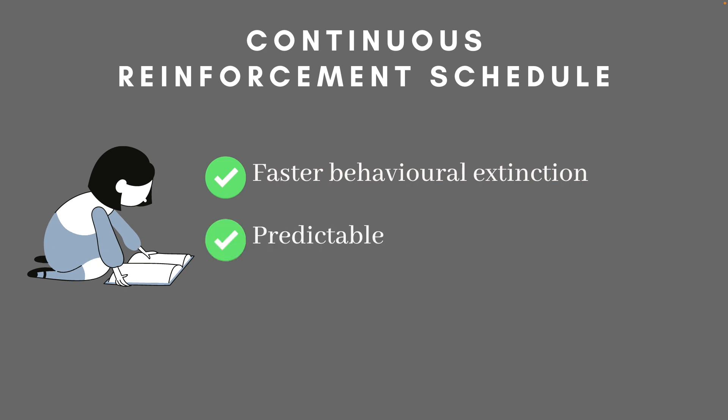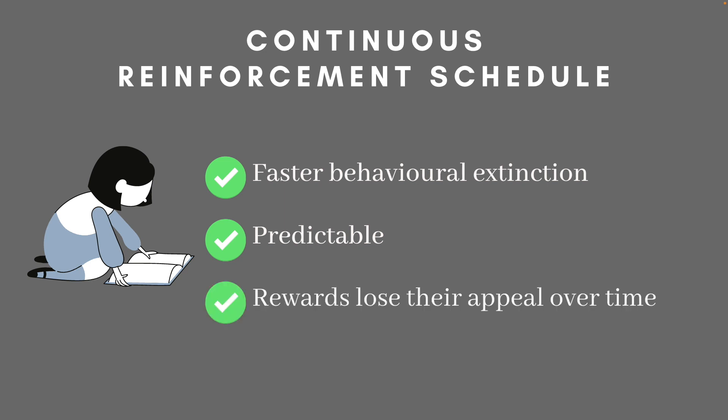This schedule is also highly predictable, as one can predict the delivery of the reward because of its continuous periodic nature. It is also observed that the reward in this schedule eventually tends to lose its appeal, and rather than being a satisfactory reward, the loss of the reward can become a larger negative form of reinforcement. Finally, this form of reinforcement appears much less often in everyday life, as it requires a lot of effort to maintain systematically in the longer run.